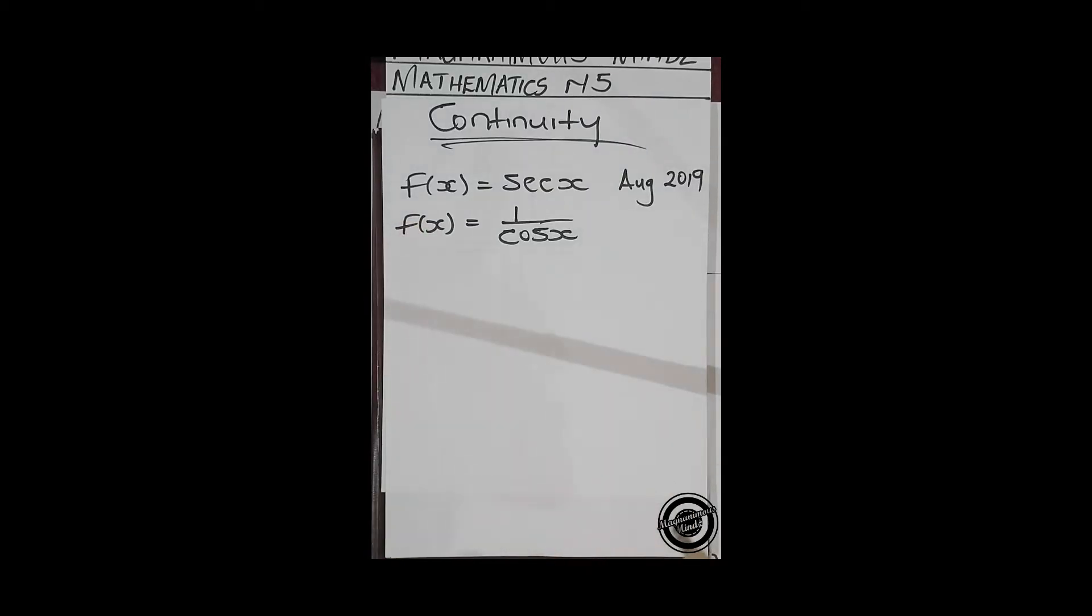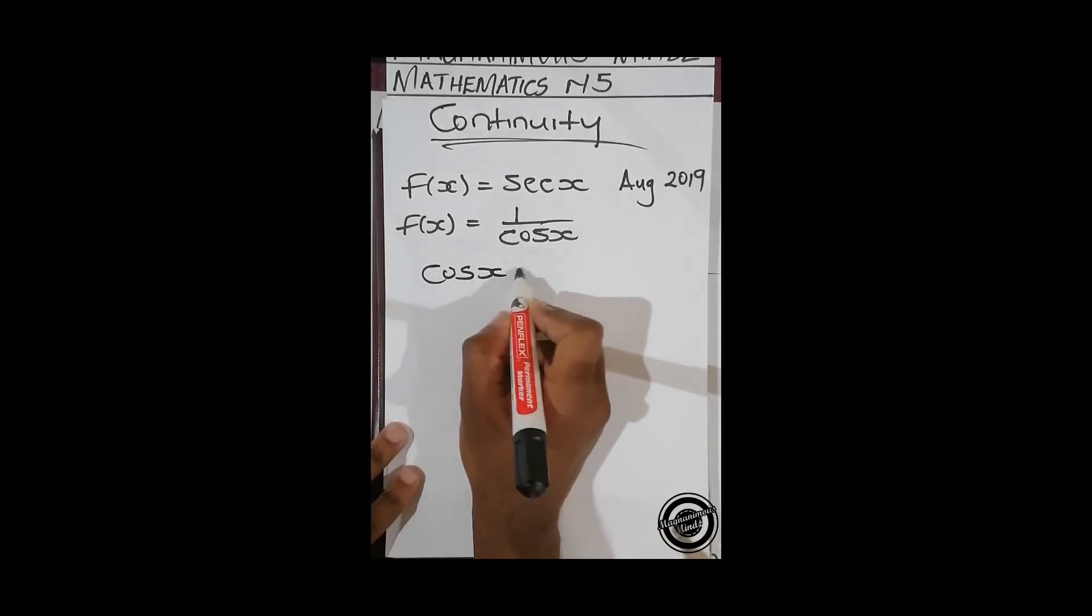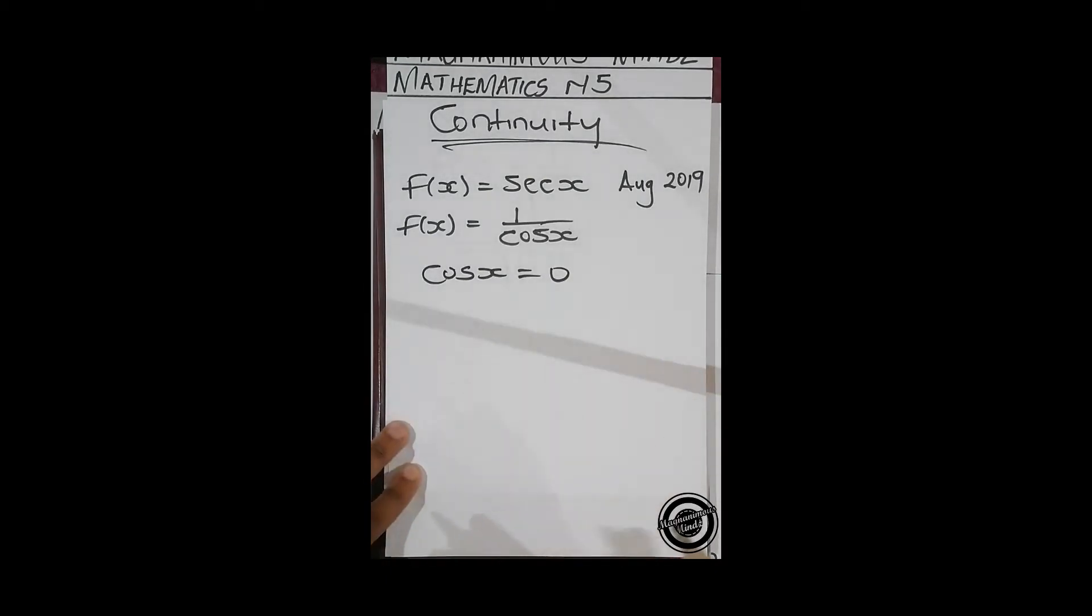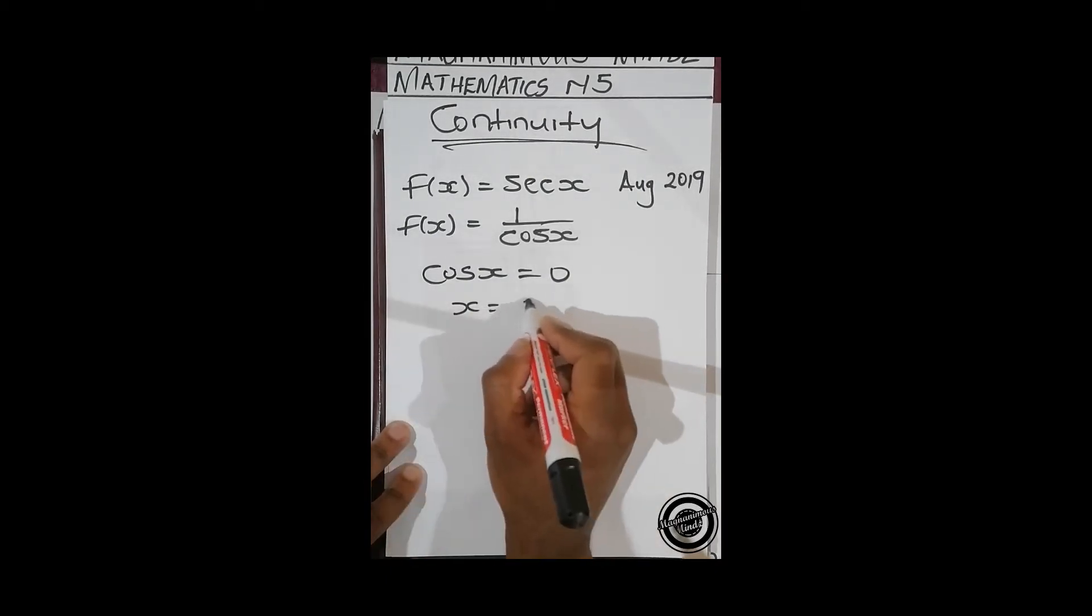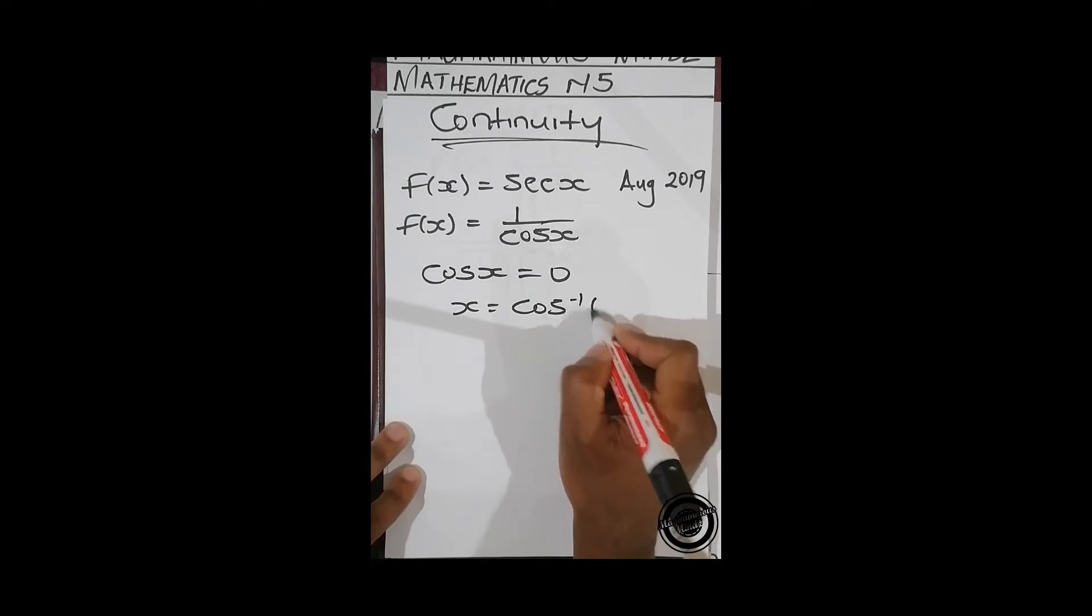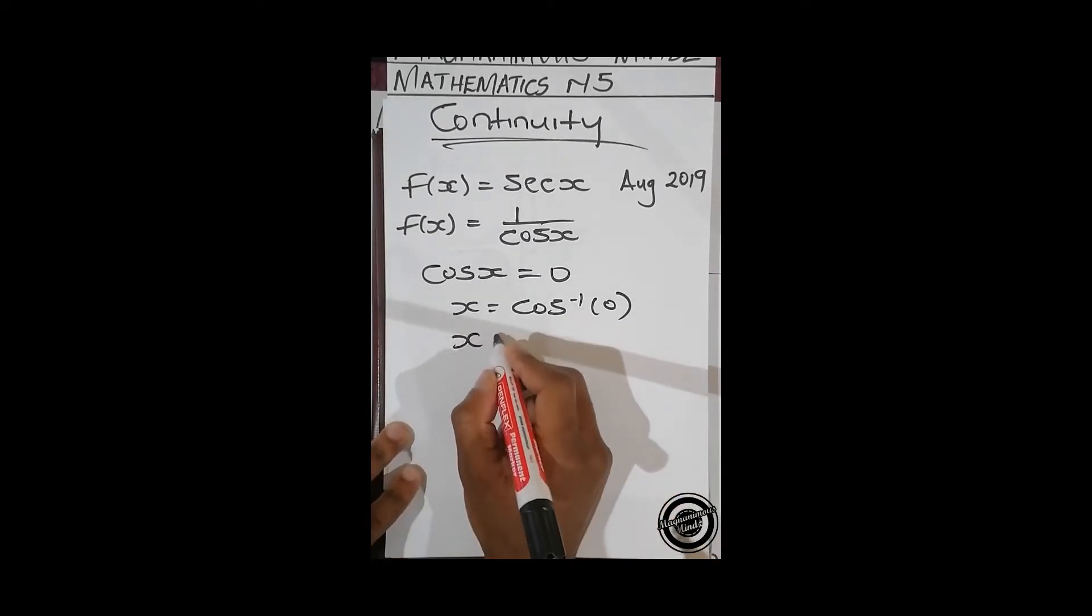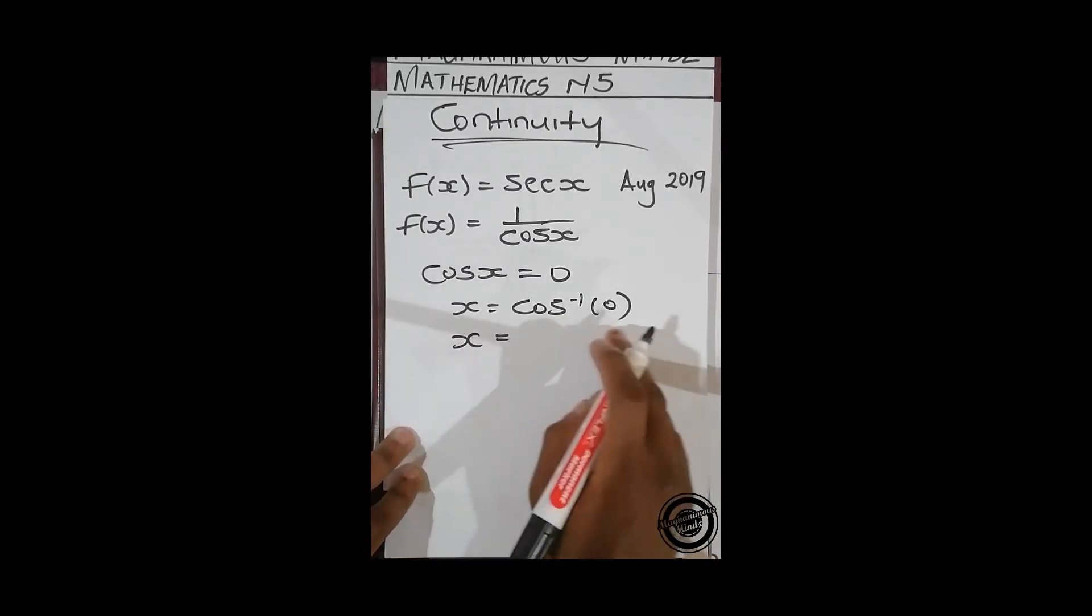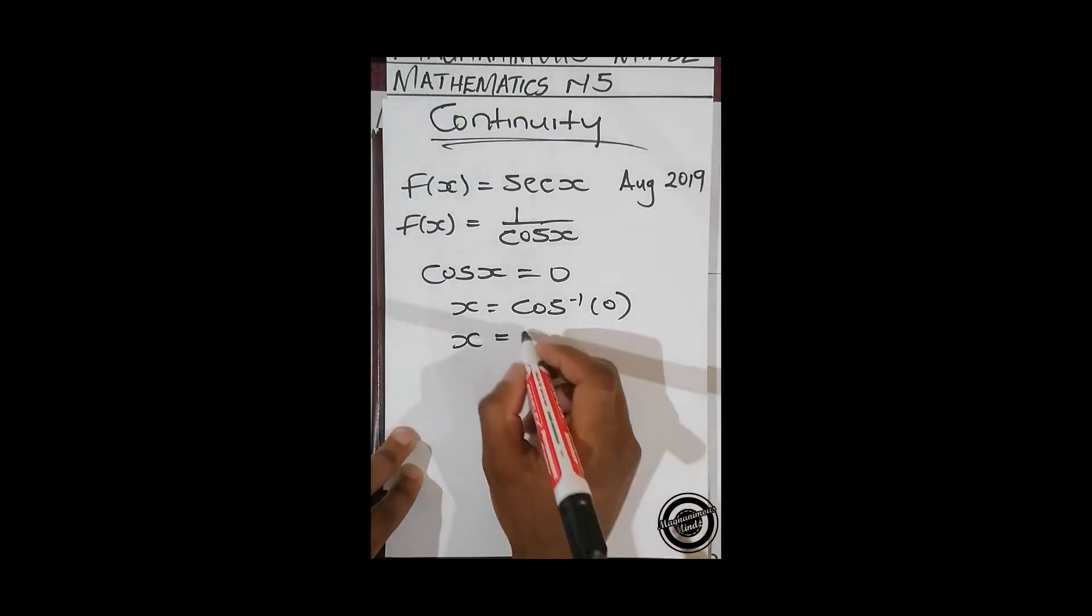So to get that you set cos x equals to zero, then you solve for x. X equals to cos inverse of zero, and then cos inverse of zero is 90 or 270 degrees, and that's it for this question.